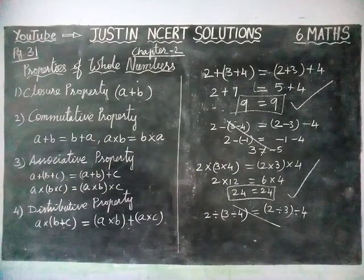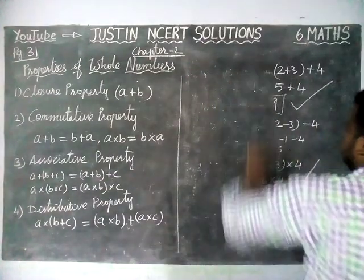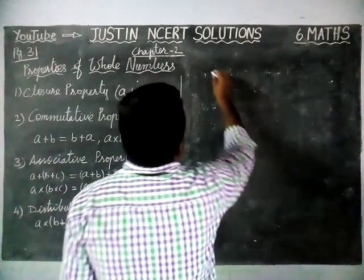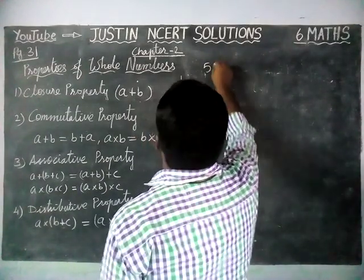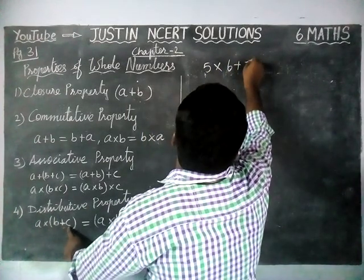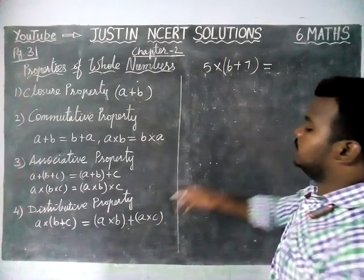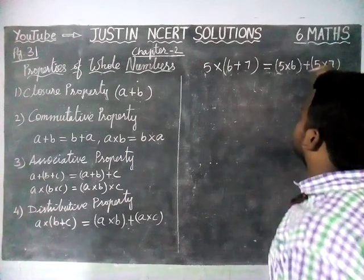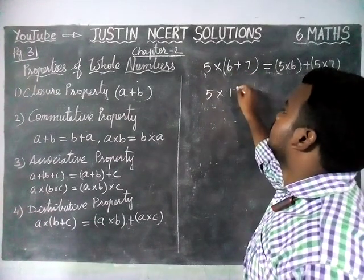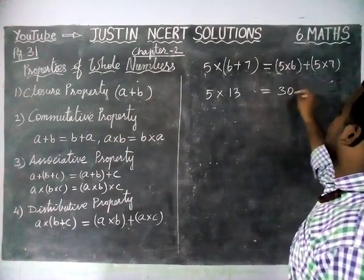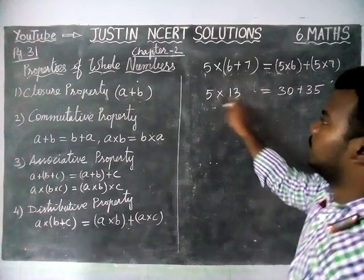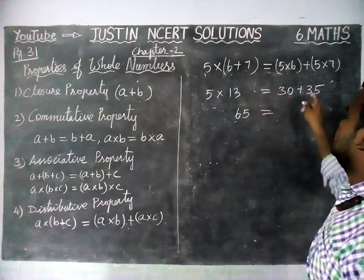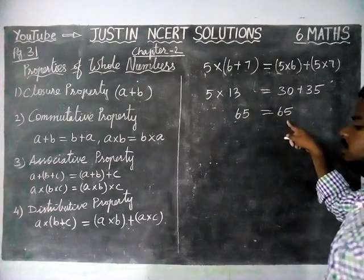Next, we are going to check the distributive property of multiplication over addition. We take A as 5, B as 6, and C as 7. So 5 into (6 plus 7) should equal 5 into 6 plus 5 into 7. Now, 5 into 13 equals 65, and 5 sixes are 30 plus 5 sevens are 35, which equals 65. So left hand side is equal to right hand side.